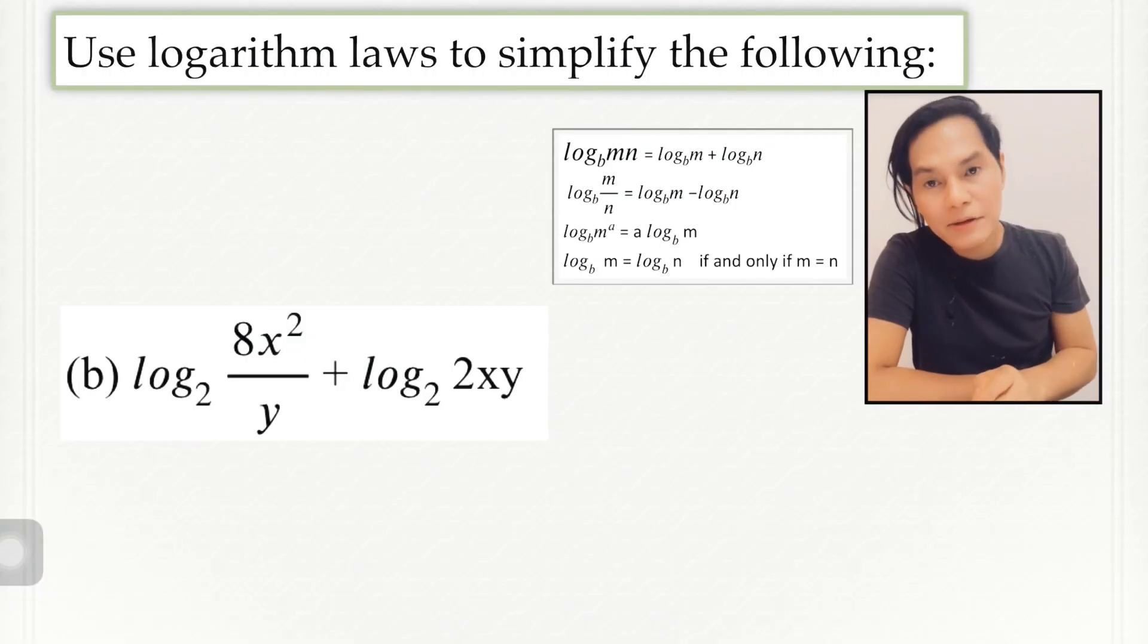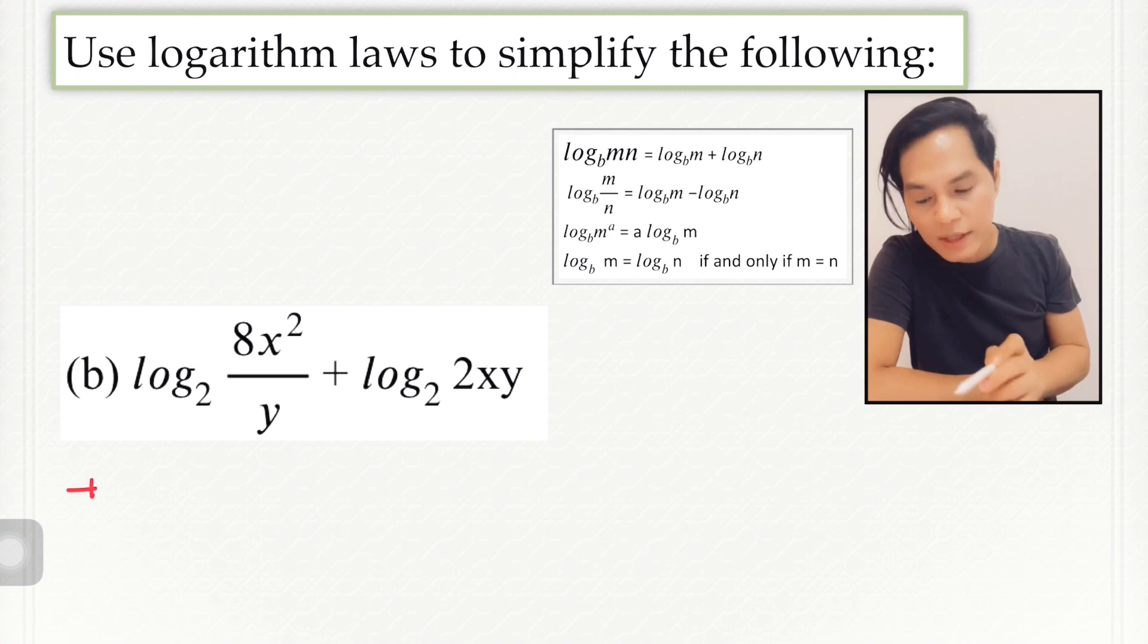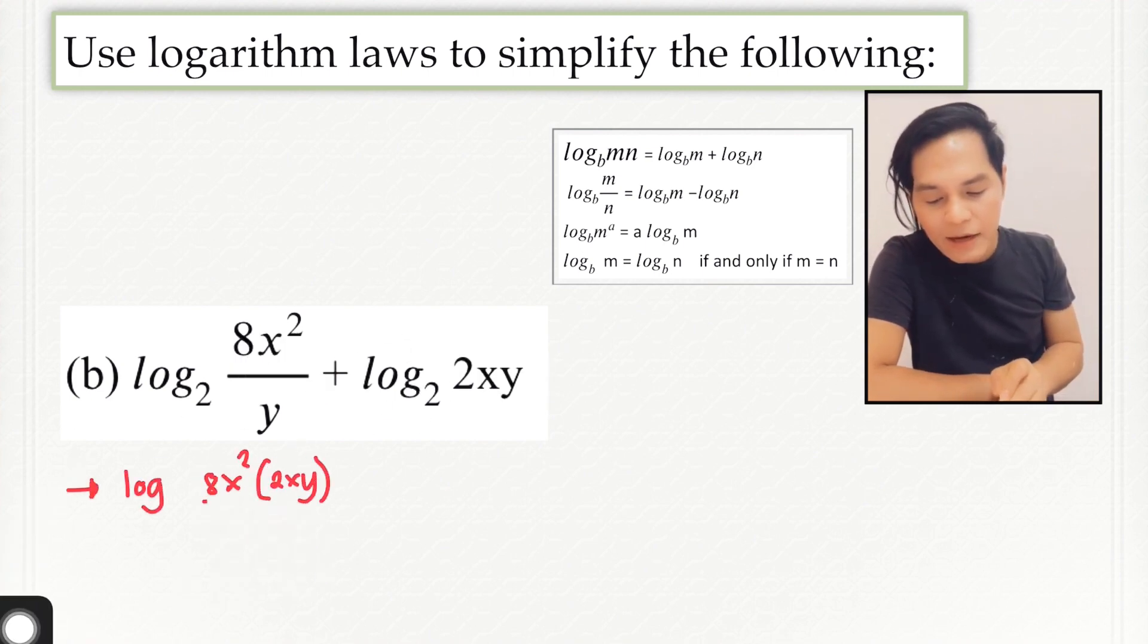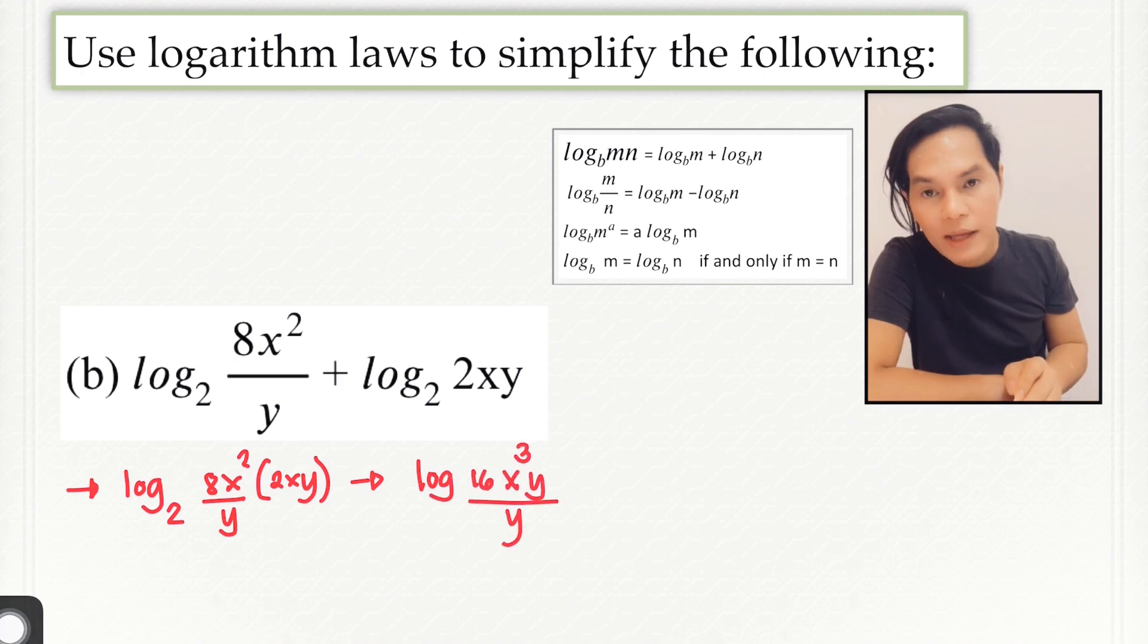Next one is letter B. Look at this. This is addition, so we can just simply multiply these two expressions here. And here we go. Our answer here is the log of 16x cubed y over y. Then we cancel y, and this is the remaining expression, the log of 16x cubed to the base 2.